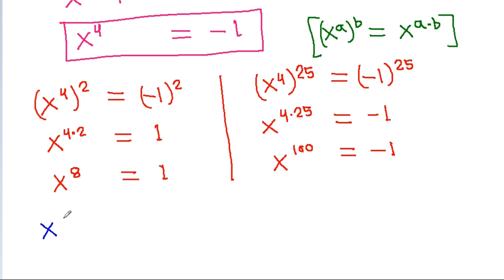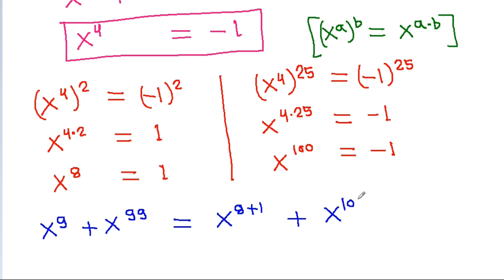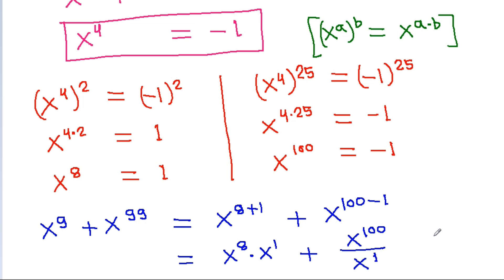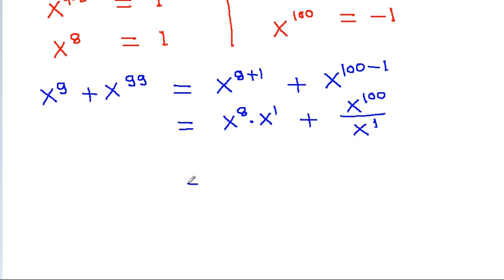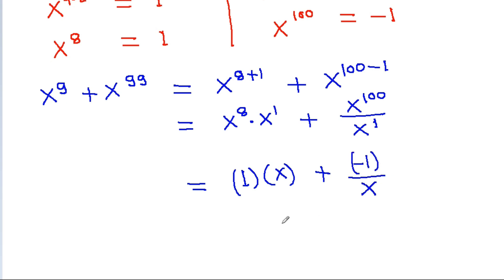And we have to find x power 9 plus x power 99. It is equal to x power 8 plus 1, plus x power 100 minus 1. That is x power 8 times x power 1, plus x power 100 divided by x power 1. And x power 8 is 1, times x, plus x power 100 is minus 1 divided by x. So it is equal to x minus 1/x.